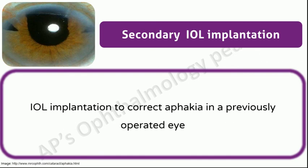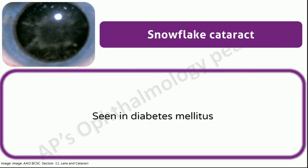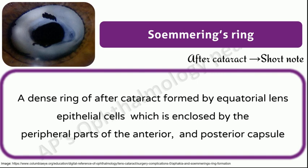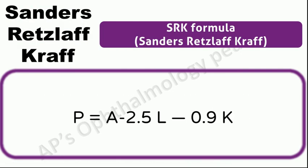Secondary IOL implantation: IOL implantation to correct aphakia in a previously operated eye. Snowflake cataract: seen in diabetes mellitus. Soemmering's ring: a dense ring of after cataract formed by equatorial lens epithelial cells which is enclosed by the peripheral parts of the anterior and posterior capsule.